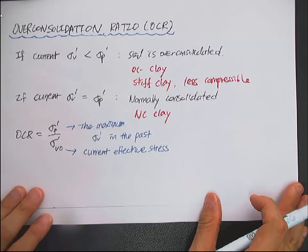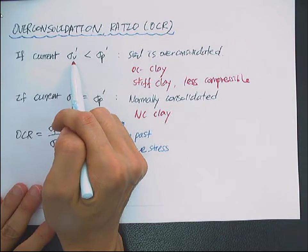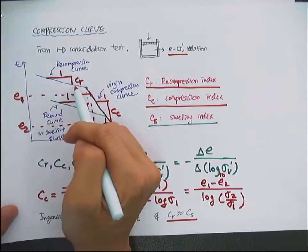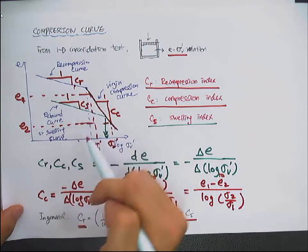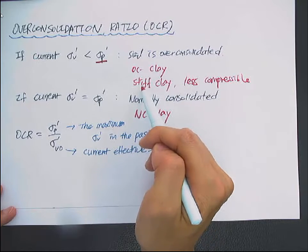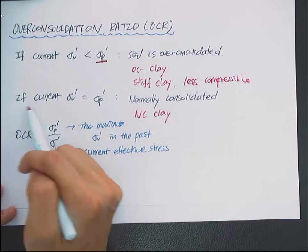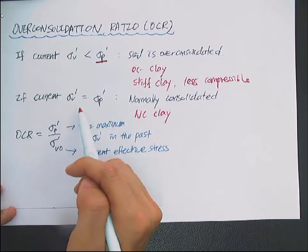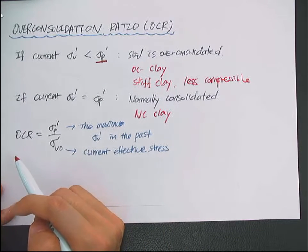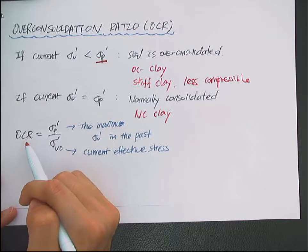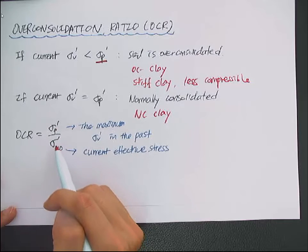Let's define the overconsolidation ratio, OCR. If the current vertical effective stress is less than the pre-consolidation stress, the soil is called overconsolidated. For example, if your current stress is less than sigma p prime, your soil is in an overconsolidated state — it's called OC clay if it's clay. OC clay has very high stiffness; it's stiff and less compressible. If the current vertical effective stress is the same as sigma p prime — the maximum vertical effective stress the soil has been experiencing — then it's called normally consolidated clay, or NC clay. The OCR is defined as sigma p prime over sigma V-naught prime.